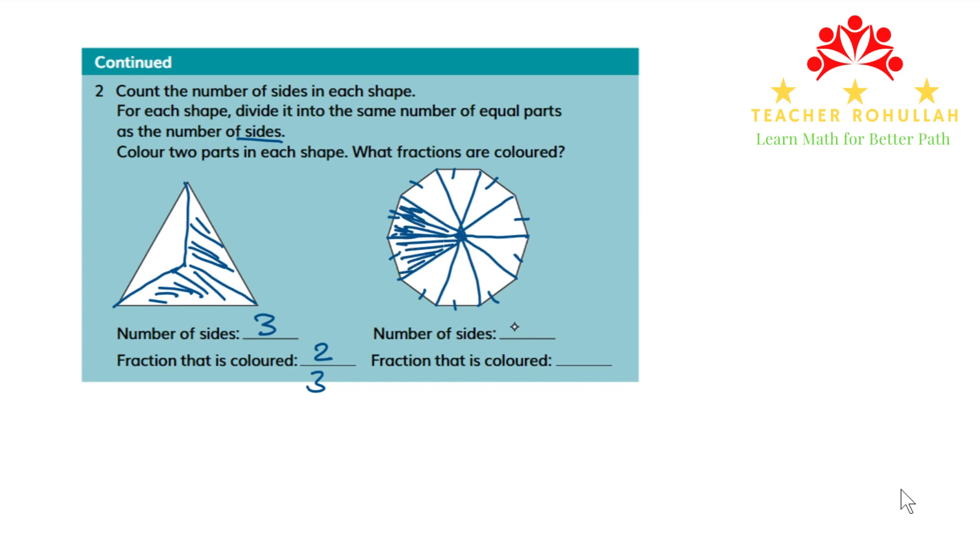The number of sides are ten. What fraction is colored? The fraction which is colored is two-tenths. So this is all about the last part of Unit 7, which is about fractions of shapes from Cambridge Primary Mathematics Learner's Book 3. I hope it helps you learn how to write the fractions of a shape.